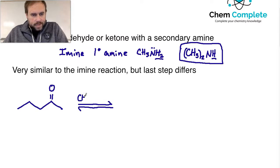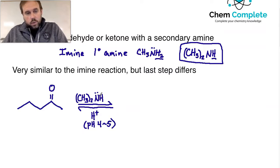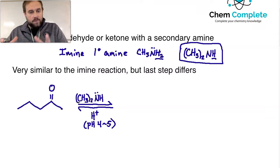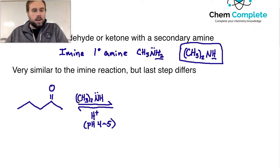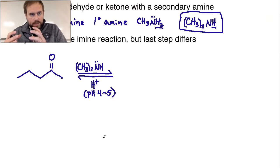We'll utilize the secondary amine — dimethylamine, with two methyl groups. This is going to be in acidic conditions, and the pH is going to be between 4 and 5. If the pH is too acidic, it's going to ruin the nitrogen: the nitrogen will behave as a base, pick up hydrogen in solution, and lose its ability to behave as a nucleophile. On the other hand, if the pH is above 5 and becomes basic, there's not going to be enough acid to complete the reaction, because there's a step where we have to protonate an alcohol and turn it into water for a good leaving group.